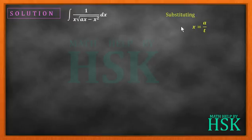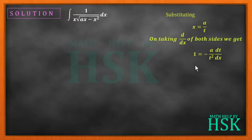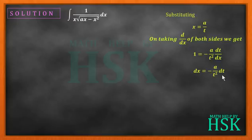Because we have substituted x = a/t, we differentiate both sides with respect to x. By the chain rule of differentiation, we get 1 = minus a upon t squared, dt by dx. Therefore, dx is equal to minus a upon t squared dt.